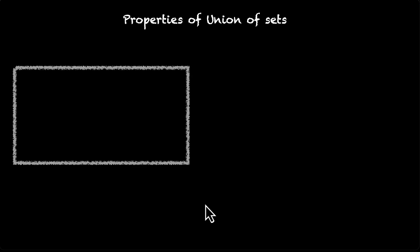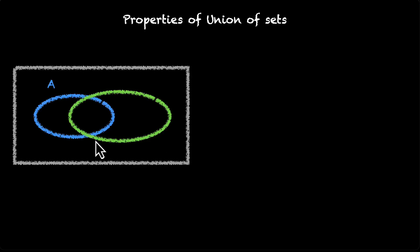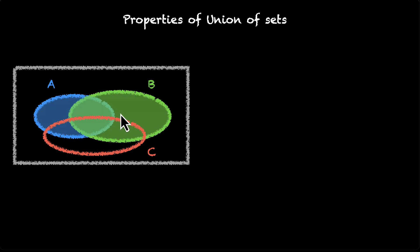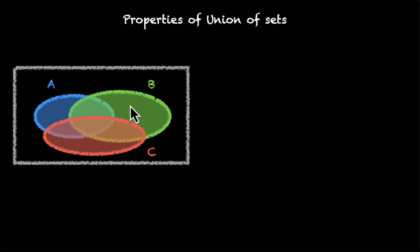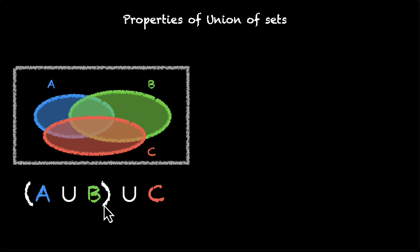Let's look at the next one. You have universal set U with set A, set B, and a third set C in it. Let's first take A and B and find their union — we get A union B. Now if we add C to it, the entire shaded region, which is either blue or green or orange, is A union B union C.